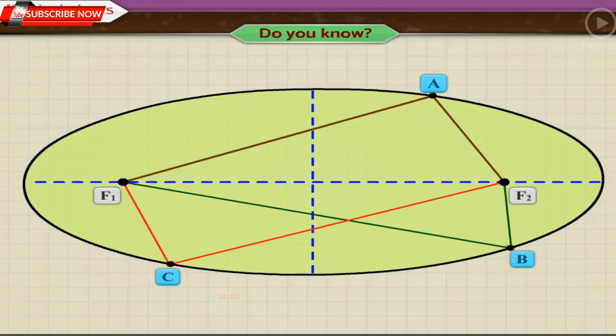Here, A, B and C are the points on the ellipse. Thus, AF1 plus AF2 is equal to BF1 plus BF2 is equal to CF1 plus CF2.